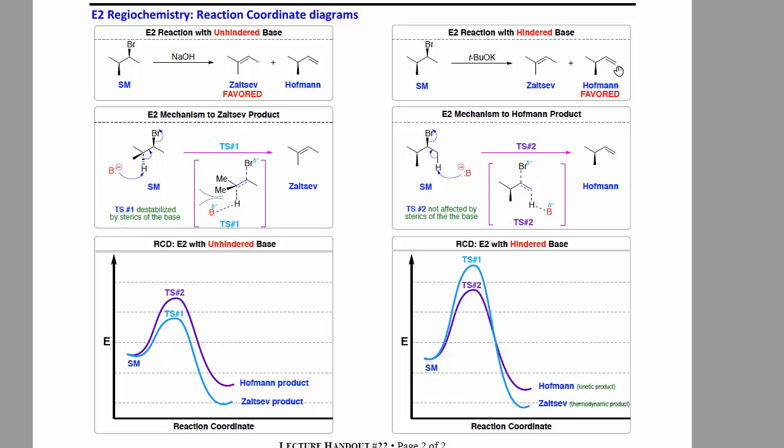Hoffman products are very often due to only being able to get at the kinetic product. Zaitsev products are better overall. They're lower energy overall. But in order to get there, you have to attack a relatively hindered spot. Small, relatively mild bases allow you to do that. Larger, relatively hindered, relatively stronger bases will always lead instead to the Hoffman product because the Zaitsev product is just too hard to get to.